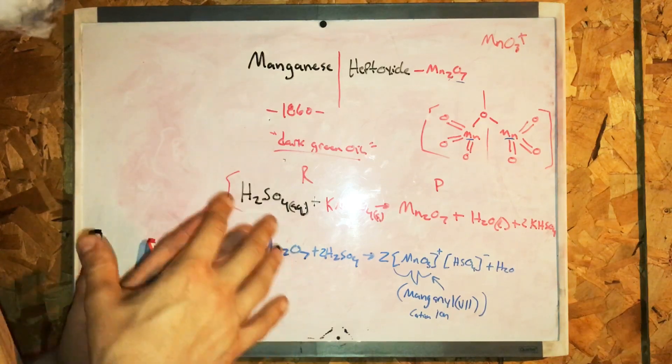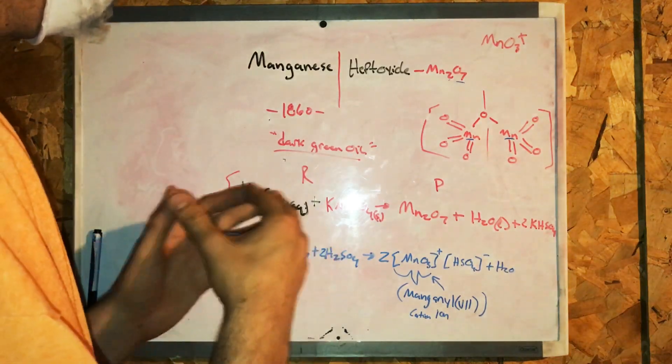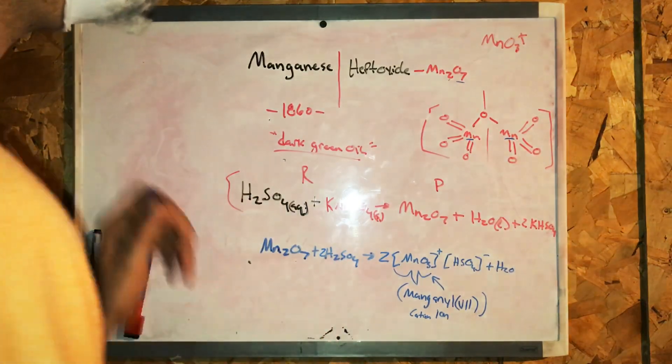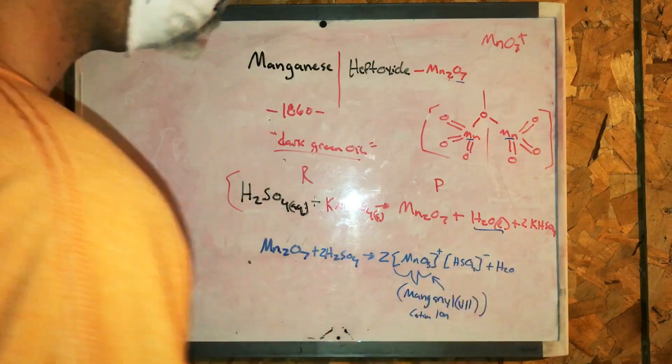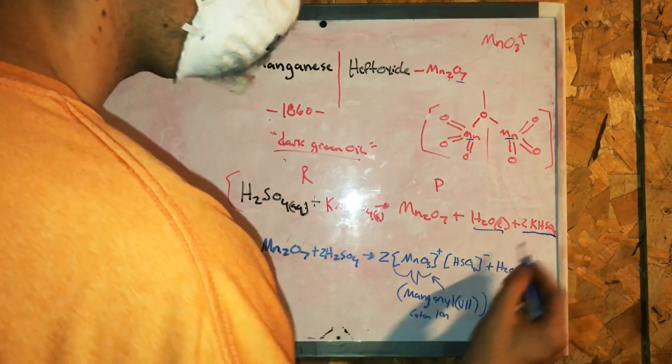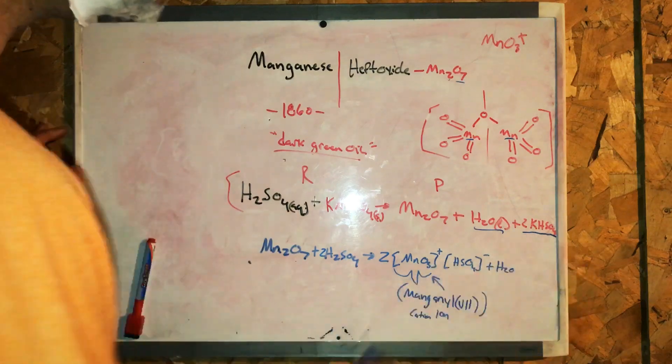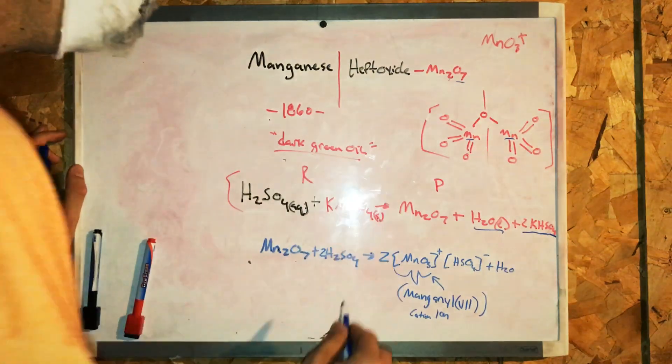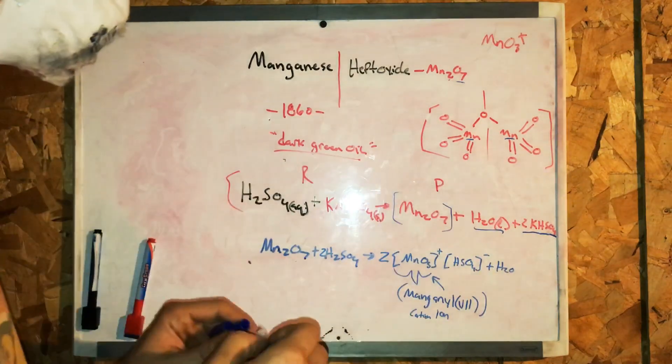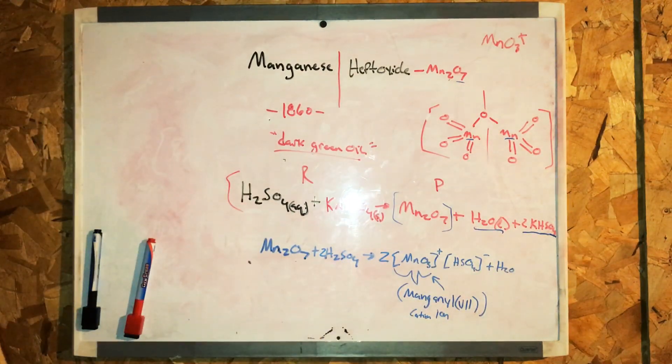The synthesis here, so when these two reagents combine, the products formed. Let's look at this one. Water, KHSO4, and this special molecule that we're going to isolate in the lab, manganese heptoxide.